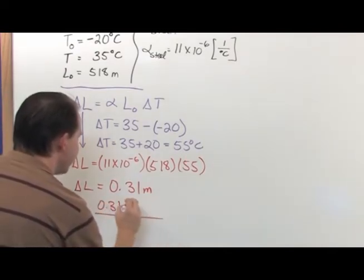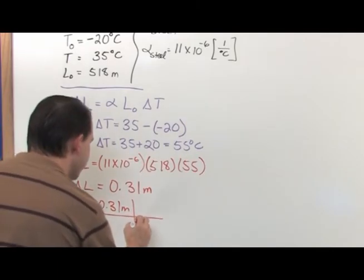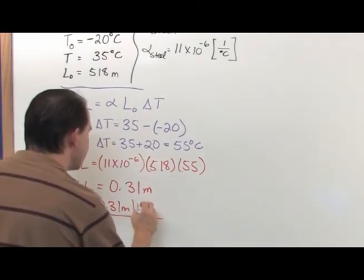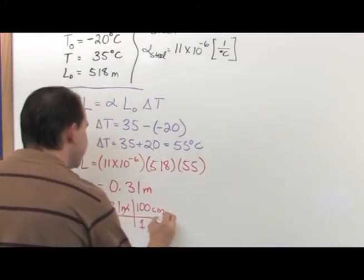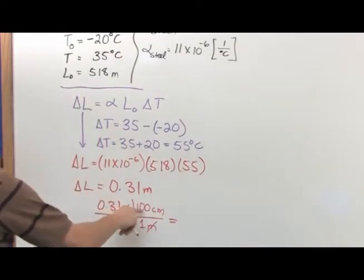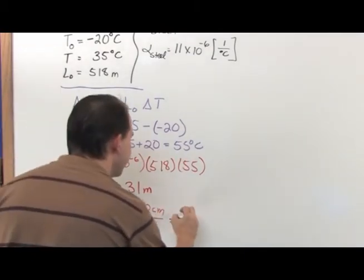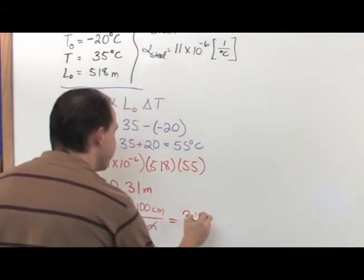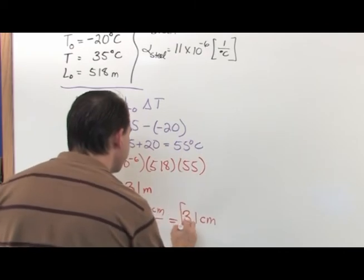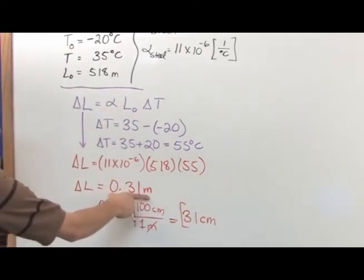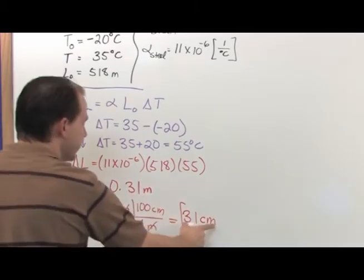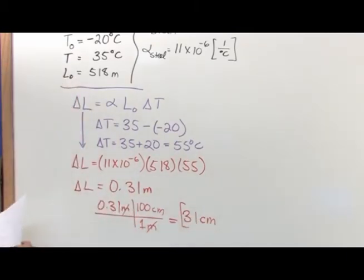And if you just wanted to convert that to a unit maybe a little more familiar, you can say 1 meter is 100 centimeters. Cancel the meters with the meters. So at the end of the day, if you do this multiplication, 0.31 times 100, you're going to get 31 centimeters. So a little unit conversion, depending on what you're more comfortable with. It's perfectly fine to leave it in this unit. It's perfectly fine to convert it to something that might make a little more sense to you.